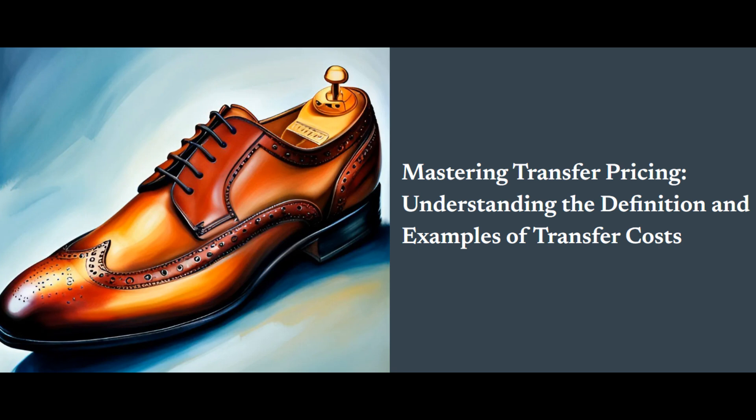Transfer pricing regulations can differ significantly between industries. For example, the extractive industries like oil and gas face unique challenges in valuing their assets. In contrast, industries driven by intellectual property, such as pharmaceuticals, must navigate the complexities of licensing and royalty payments. Manufacturing and service industries each have their own set of regulations and methods that are best suited to their operations.